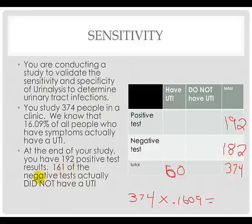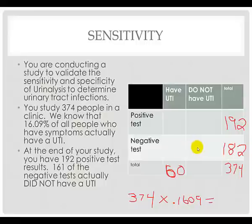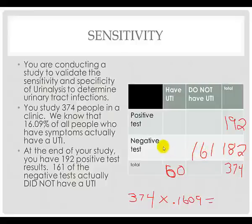161 of the negative tests actually did not have a UTI. So just because you have a negative test doesn't mean you don't have a UTI. Some people may have a UTI and a negative test result because the test is not identifying that individual's characteristics of a urinary tract infection, usually white blood cells. So we're going to put 161 here — 161 of those 182 negative tests actually did not have a UTI.